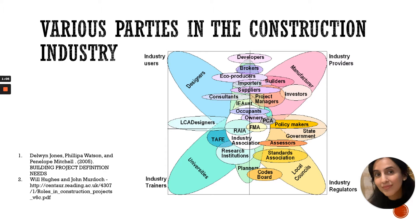Under industry trainers, universities are the main party in giving knowledge. We also have other research institutions like CREAM under CIDB, TAFE, and CIOB — they also have training programs. Users are the designers, and we also have the providers, who are the manufacturers that produce products or materials for the construction industry.